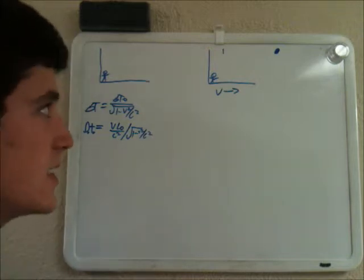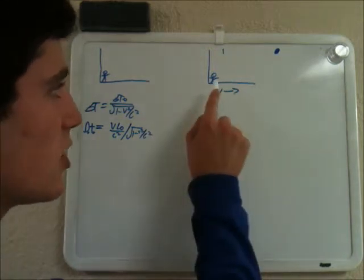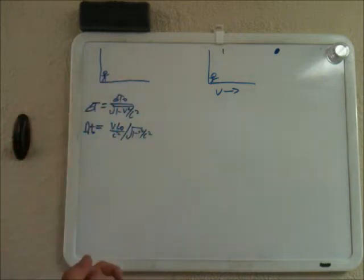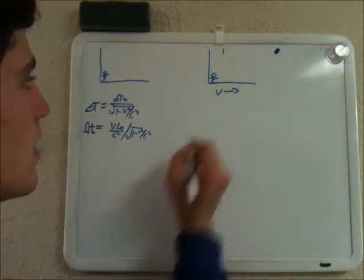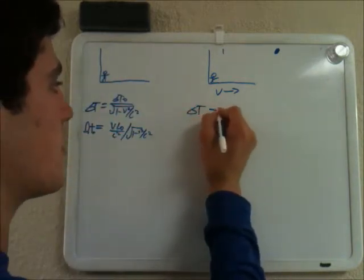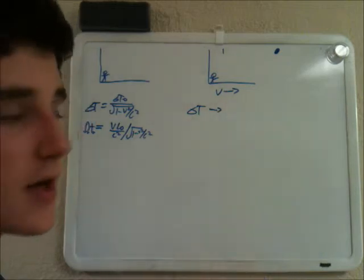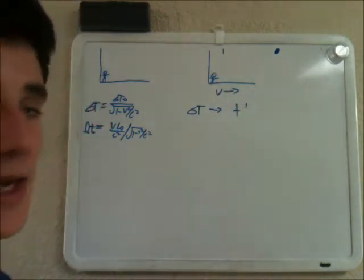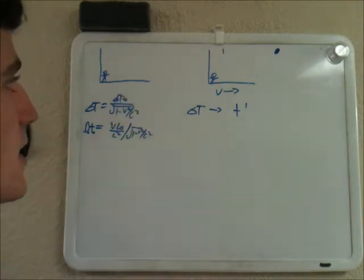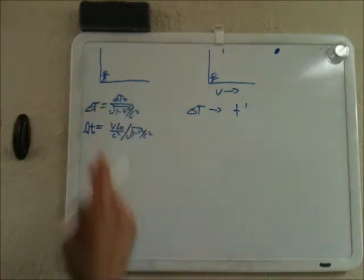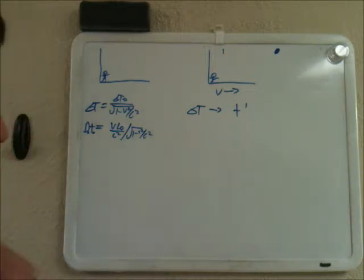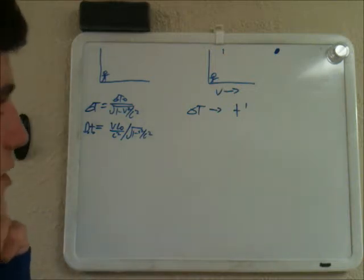In our time dilation equation, we have delta t, which is the time for the person who's observing. In this case, it's going to be t-prime — the time that he records. Delta t-naught is the time that goes by for the other reference frame, and 1 over √(1 - v²/c²) is the Lorentz factor.